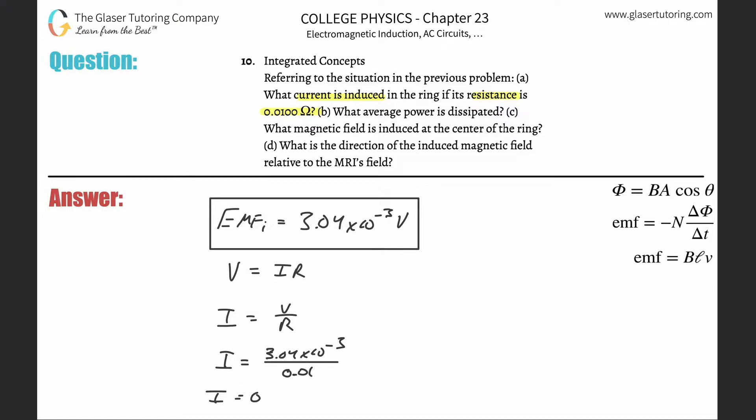And what we're going to find is this works out to be 3.04 times 10 to the minus 1 amps. So that's the current.